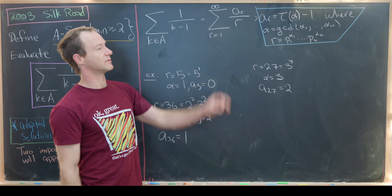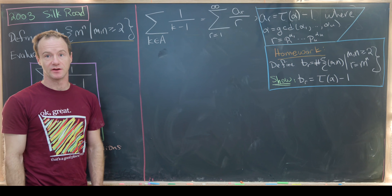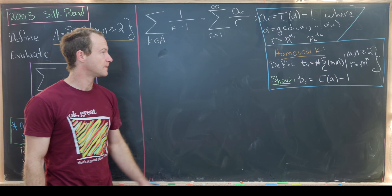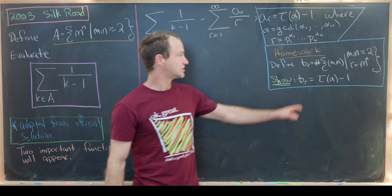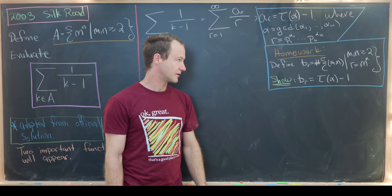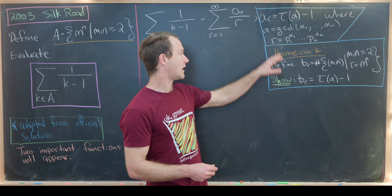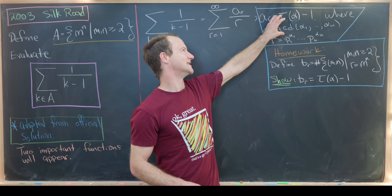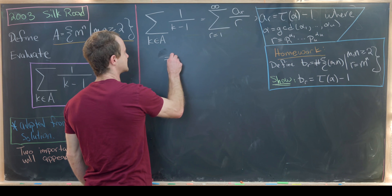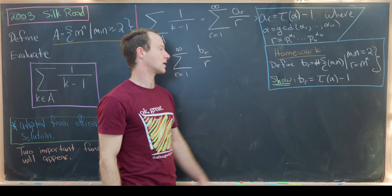Now that we've got a feel for a_r, let's jump into the end of this problem. I'm going to leave the next step as homework, because it's very similar to how we calculated a_r. We define a number b_r as the number of tuples (m, n) where m and n are bigger than or equal to 2 and r equals m to the n. You want to show that b_r equals tau(alpha) minus 1, with alpha defined just as before. The proof is almost exactly the same. That means a_r and b_r are equal, so we can rewrite our sum as the sum as r goes from 1 up to infinity of b_r over r.